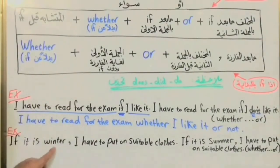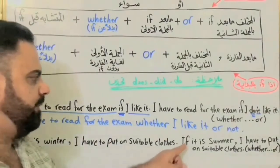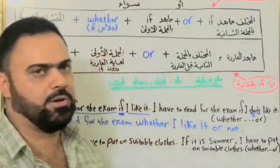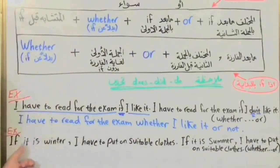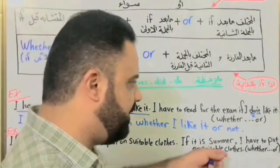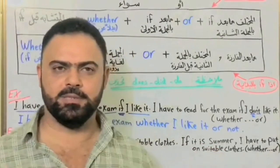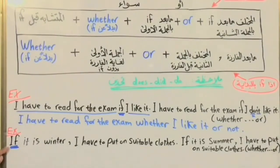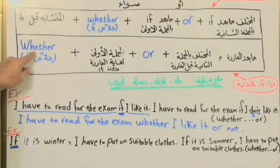Let's look at another example: If it is winter, I have to put on suitable clothes. If it is summer, I have to put on suitable clothes. Here 'if' is at the beginning of the sentence, so I will use the second rule — I will use 'whether' instead of 'if'.